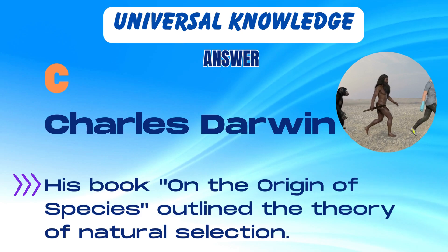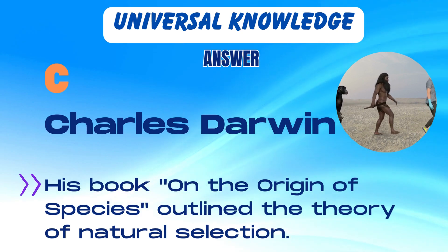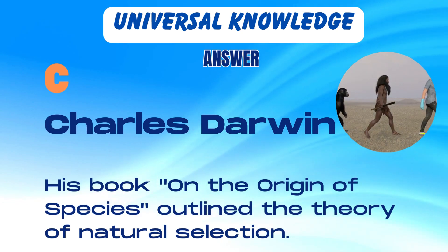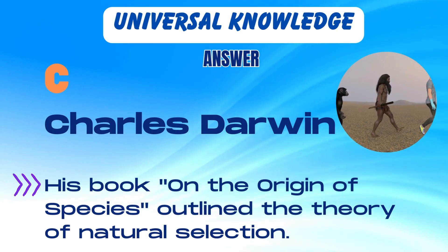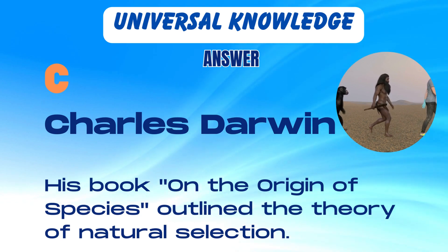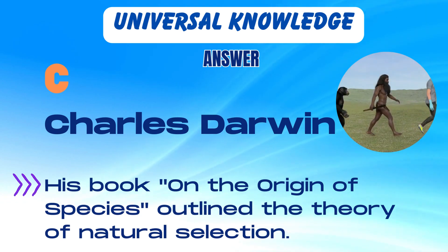The correct answer is C. Charles Darwin. His book On the Origin of Species outlined the theory of natural selection.